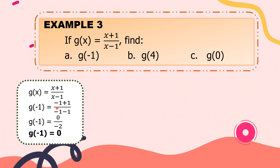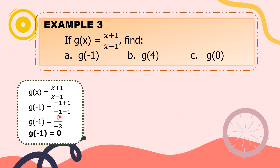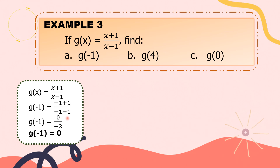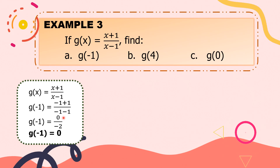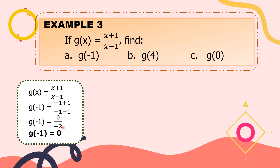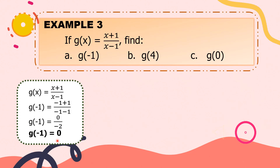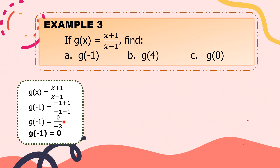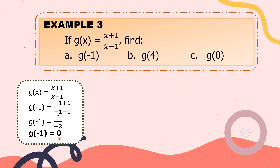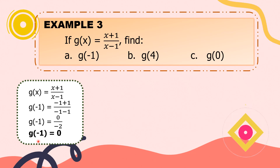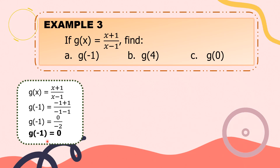So g of negative 1 equals (negative 1 plus 1) over (negative 1 minus 1). Negative 1 plus 1 is 0; negative 1 minus 1 is negative 2. Simplifying, 0 over negative 2 — 0 divided by any number is equal to 0. Thus, g of negative 1 is equal to 0.